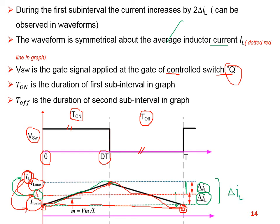The slope M of this inductor current waveform is equal to V_in divided by L.